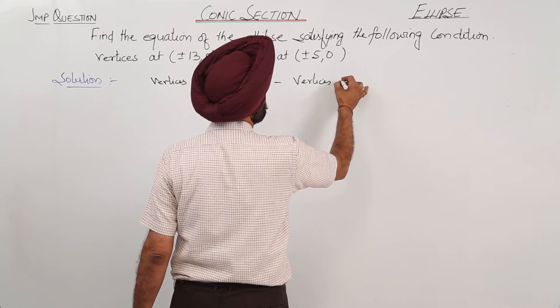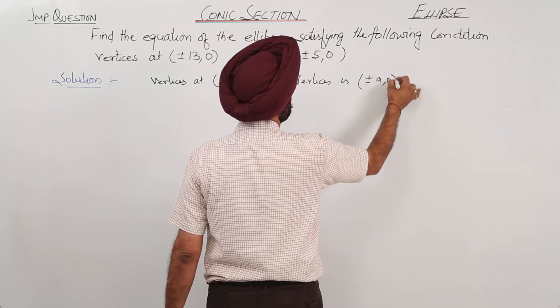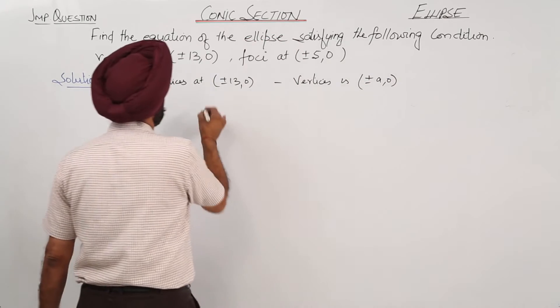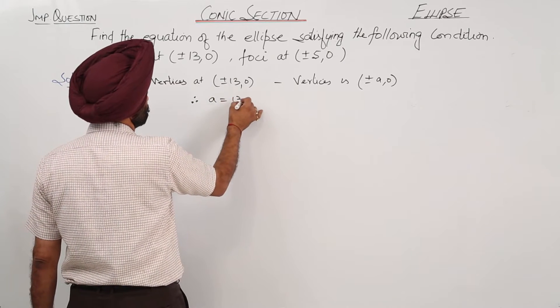Vertices is plus minus a comma 0. Therefore, a is equal to 13.